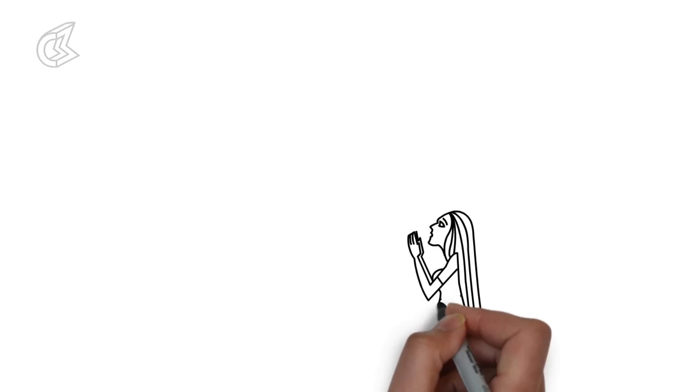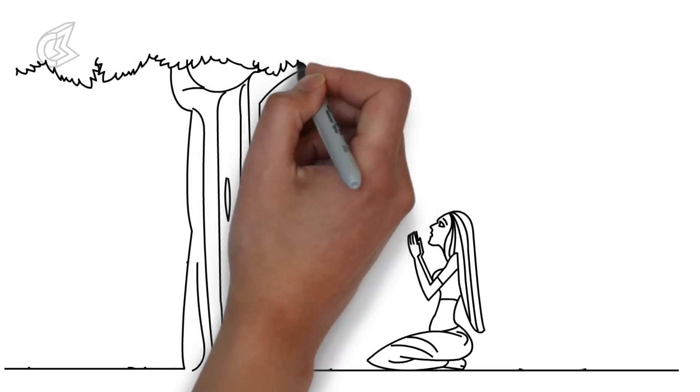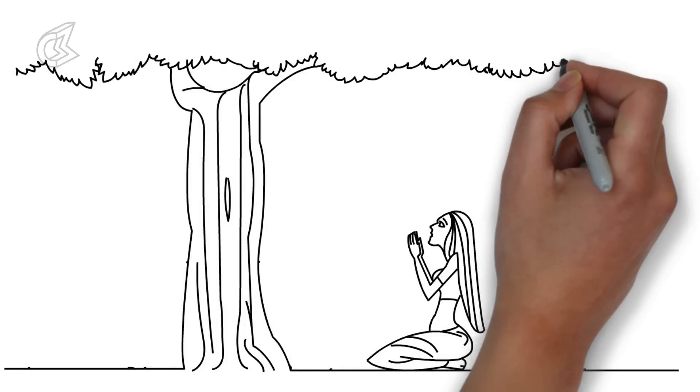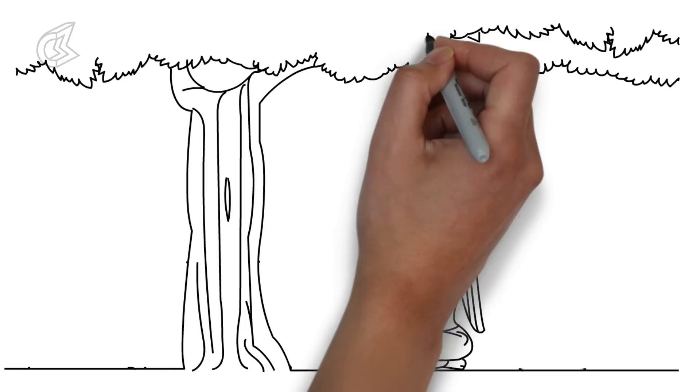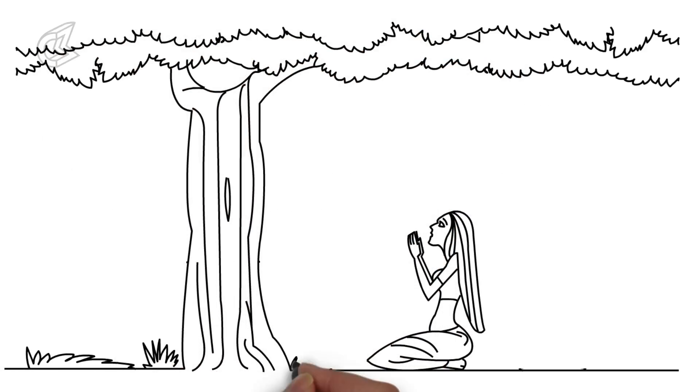The Ashoka tree is associated with Kamadeva, the god of desire. In Sanskrit, Ashoka means no grief or one who does not give grief. In the Ramayana, Sita, after her abduction by Ravan, was kept under an Ashoka tree.